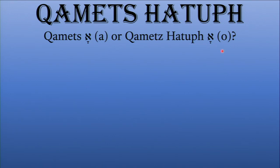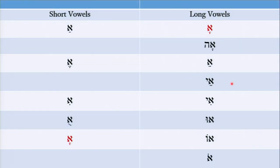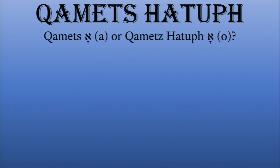The answer is yes. This is related to the Kamats Khatuf. The Kamats Khatuf is that Kamats that looks the same, but one is short and one is long — the long one is pronounced as 'ah,' and the short one is pronounced as 'oh.' We saw this in the chart of vowels: in the short vowels you have the 'oh,' and in the long list of vowels you have the 'ah.' So how do I know the difference between the 'ah' and the 'oh' since the Kamats and Kamats Khatuf look the same?